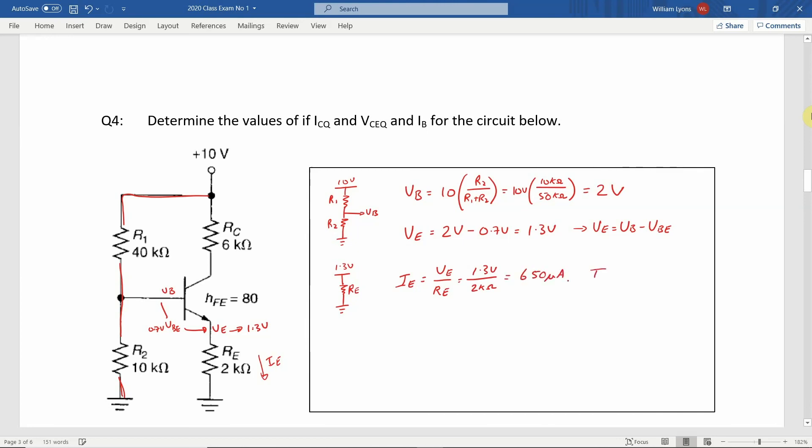To get the value of IC, the collector current, we use the approximation that the emitter current is approximately equal to the collector current, so IE is approximately equal to IC.